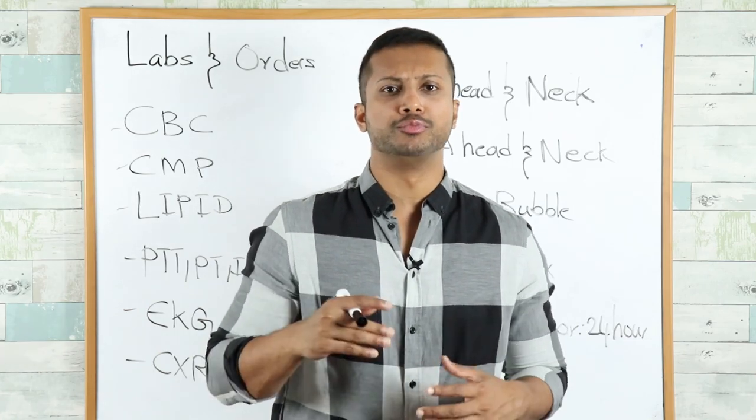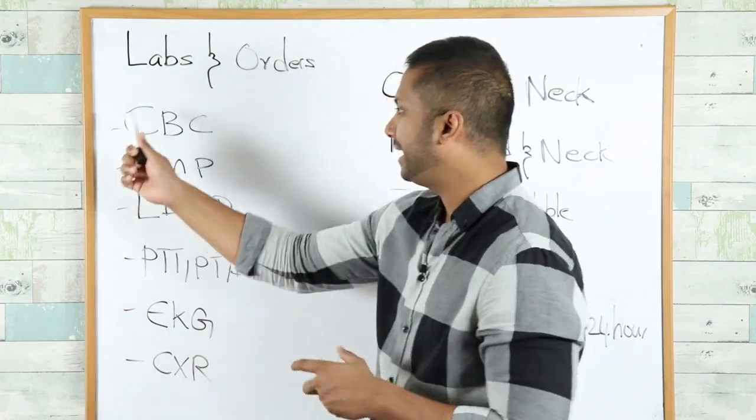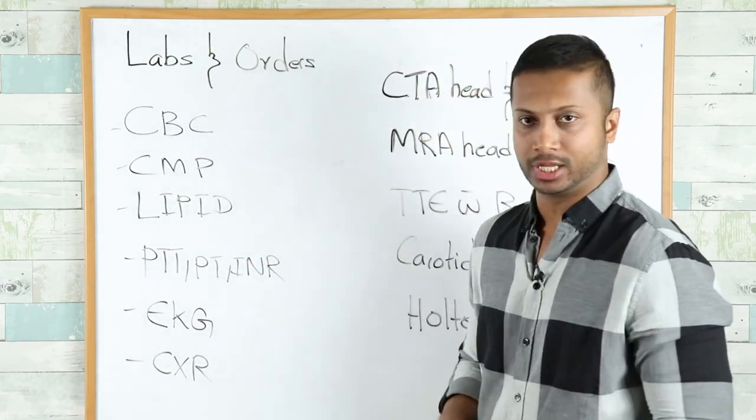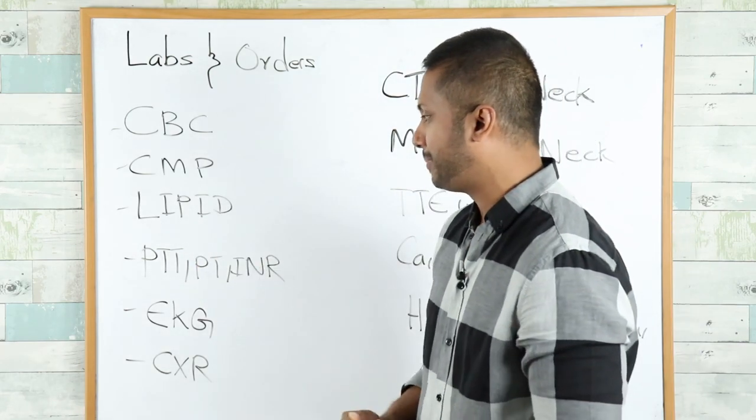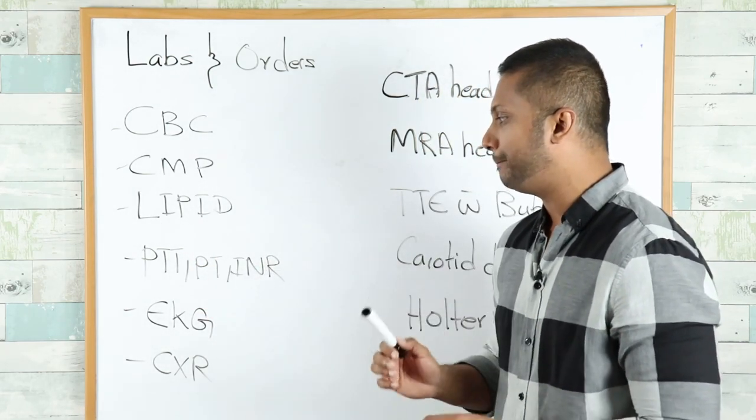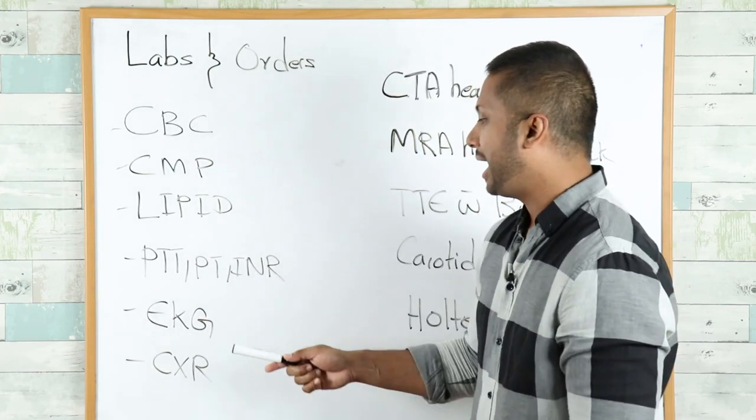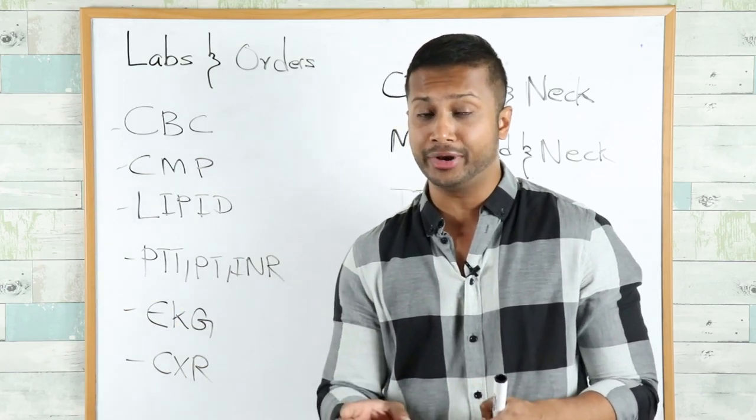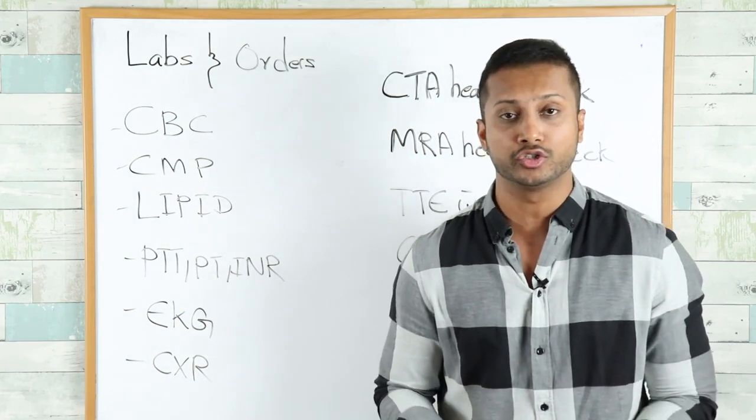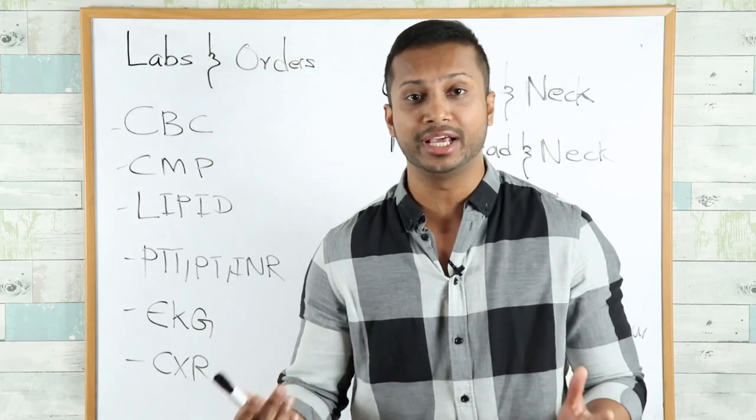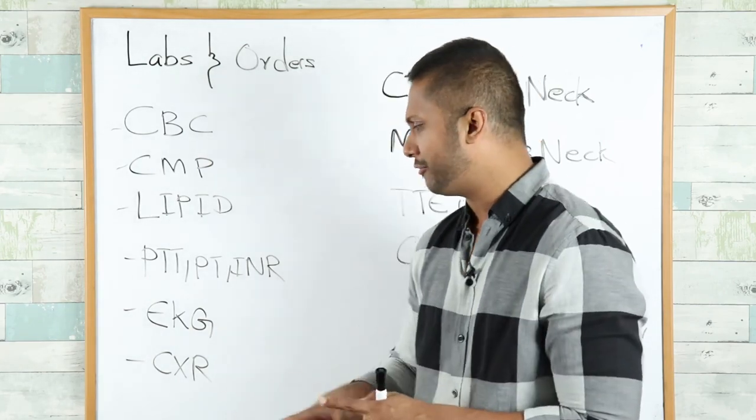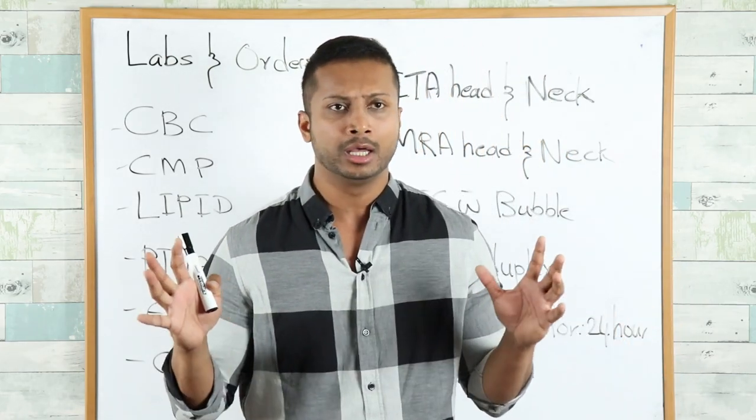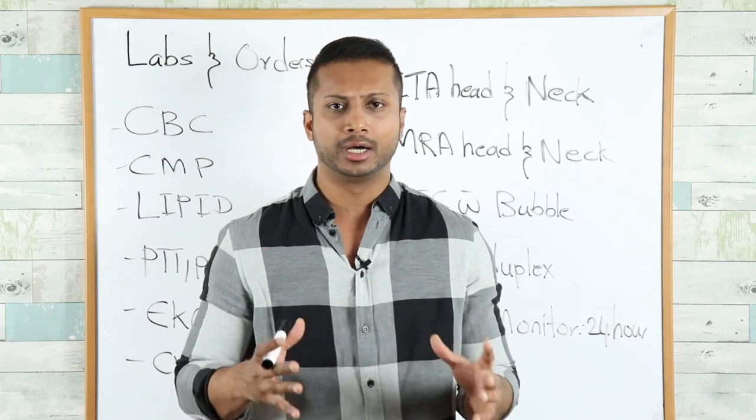Your basic labs include CBC, CMP (complete metabolic panel), lipid panel, PTT, PT and INR. You also want to get an EKG to see if there's any rhythms present that predispose the patient to stroke, such as atrial fibrillation or atrial flutter. A chest x-ray if you're suspecting respiratory pathology.